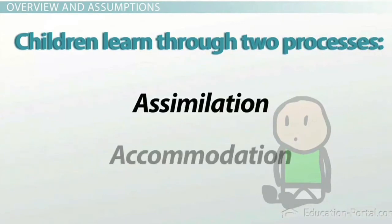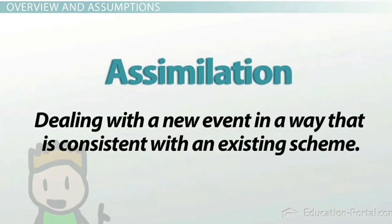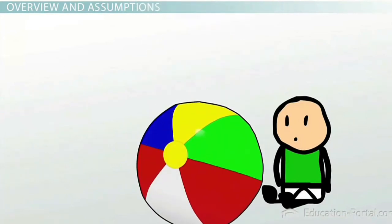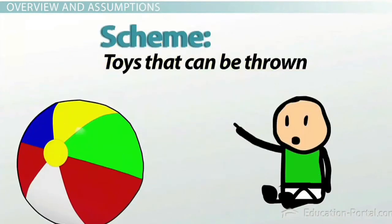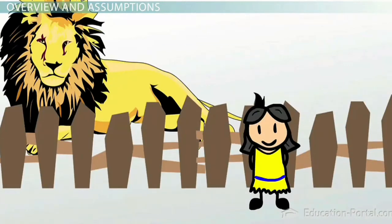Our third assumption is that children learn through two processes: assimilation and accommodation. These are important terms in understanding cognitive development theory, and they typically operate hand in hand. Assimilation is defined as dealing with a new event in a way that is consistent with an existing scheme. For example, a toddler may assimilate a new ball into the scheme of toys that can be thrown, or a second grader may assimilate a new furry animal seen at the zoo into their 'animals that are mammals' scheme.